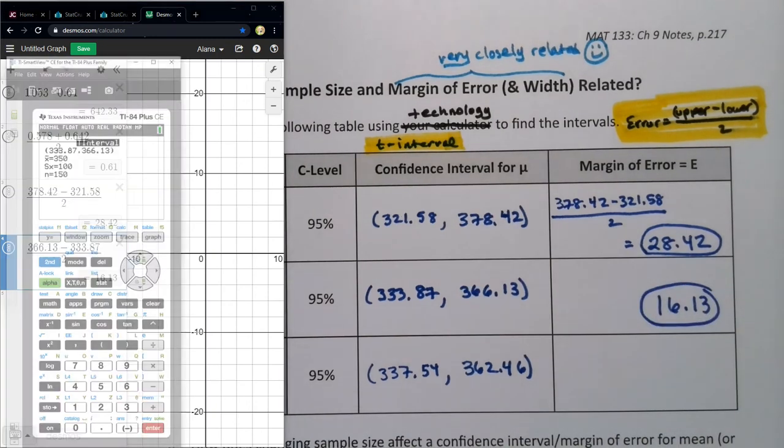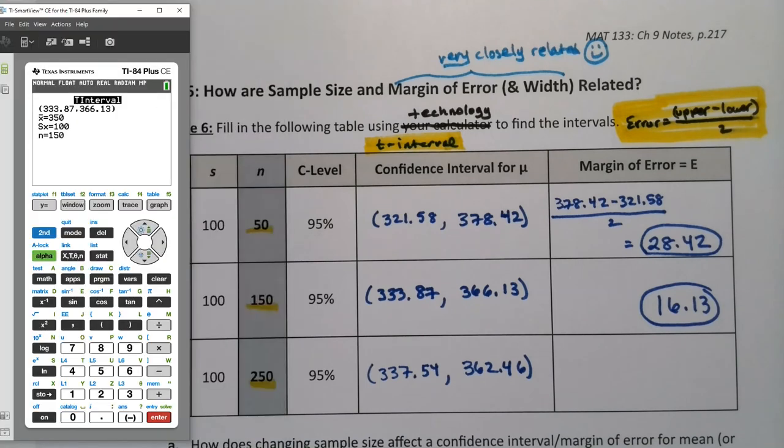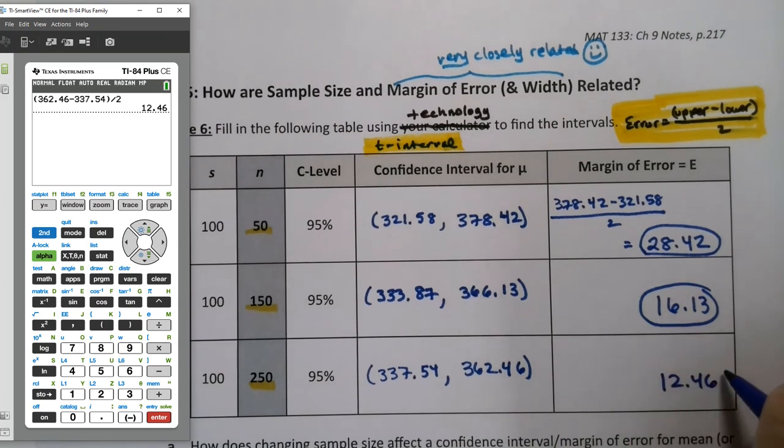And then I'll show you the calculator just for some variety here. But you can do the same thing with Desmos again if you want. So parentheses 362.46. Take the upper number minus the lower number. Error can never be negative. That's how I knew I was in trouble. Error is a distance, so it's always positive. And so 12.46.